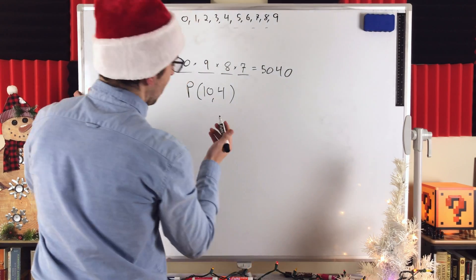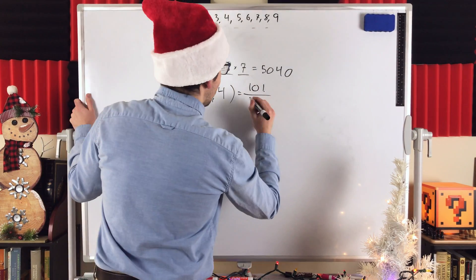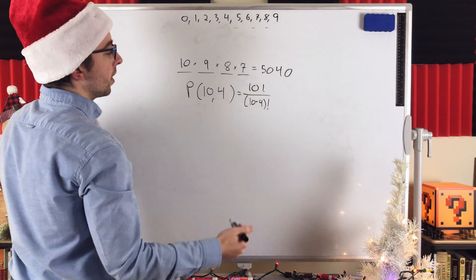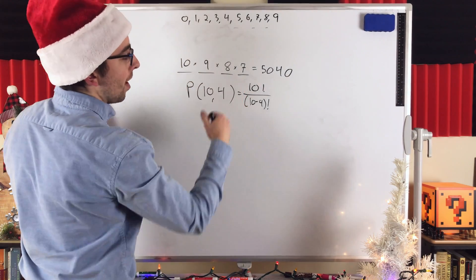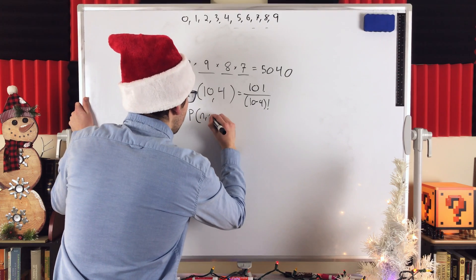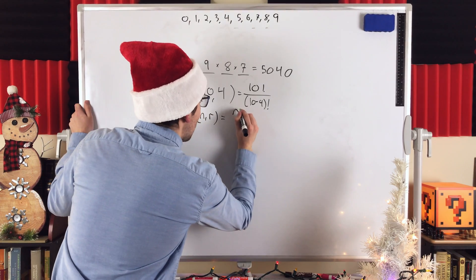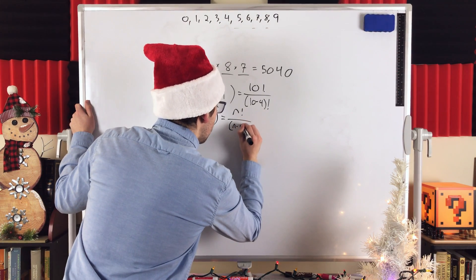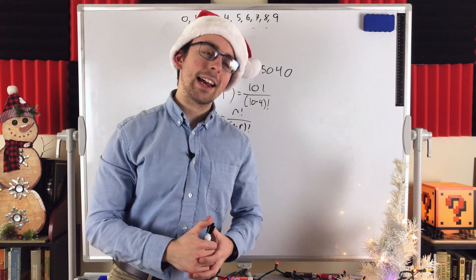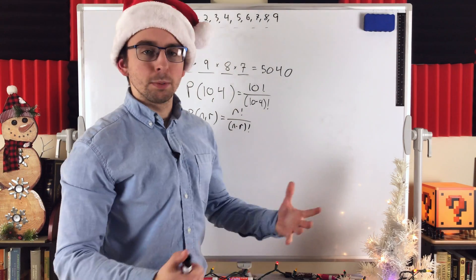This formula happens to be equal to 10 factorial divided by 10 minus 4 factorial, which, if you simplify these factorials, you'd end up with 10 times 9 times 8 times 7, of course. In general, this formula, the number of permutations of r objects from a collection of n objects, is equal to n factorial divided by n minus r factorial. And I've got a pretty good lesson on that, so I'll leave a link to that in the description. You can go check out and see some more examples of this formula and a thorough explanation of why it works.